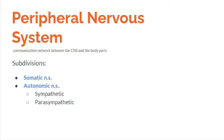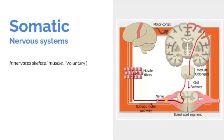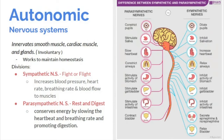The peripheral nervous system is the communication network between the CNS and body parts. It is subdivided into the somatic nervous system and the autonomic nervous system. The somatic nervous system innervates skeletal muscle and involves voluntary movements like walking. The autonomic nervous system innervates smooth muscle, cardiac muscle, and glands — it controls involuntary actions like heartbeat, blood pressure, breathing rate, and blood flow, working to maintain homeostasis.